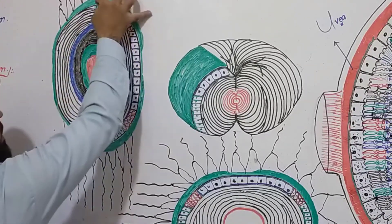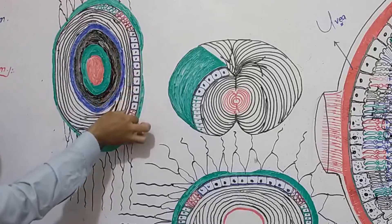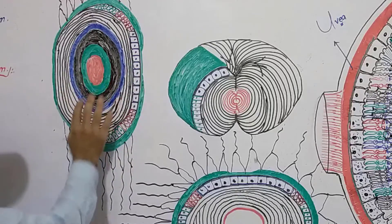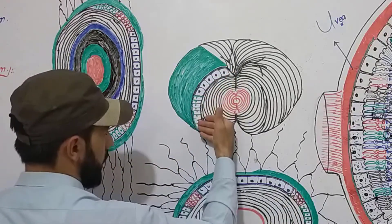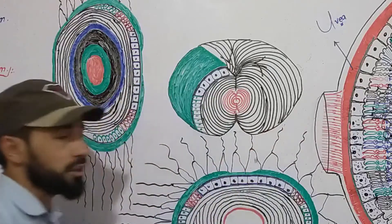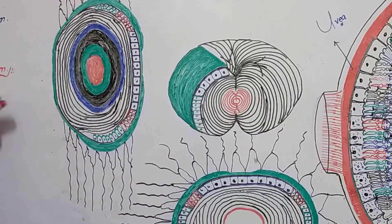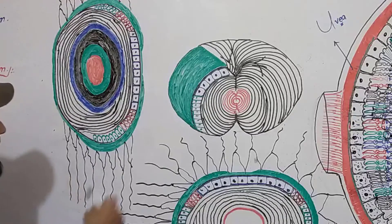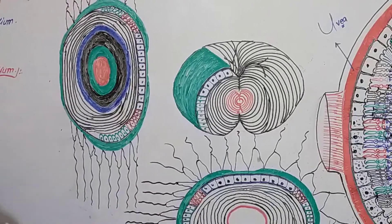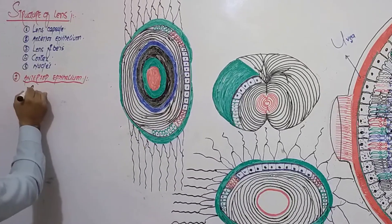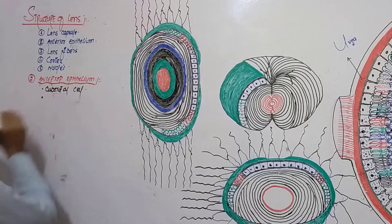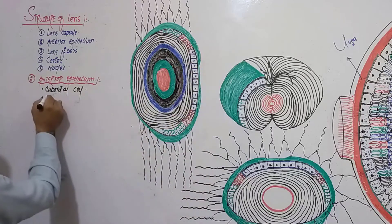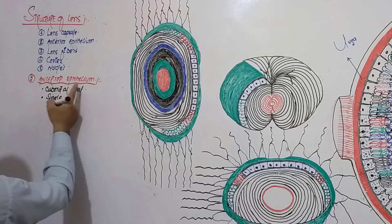As you can see in this diagram, the epithelial cells are only present on the anterior surface. On the posterior side there is no epithelium, which is why it is called the anterior epithelium. This anterior epithelium mostly contains cuboidal cells. The epithelium of the lens is only a single layer.